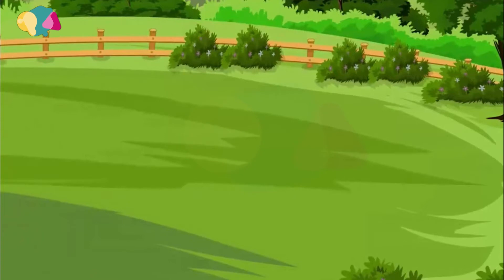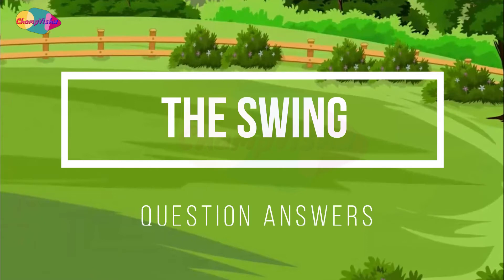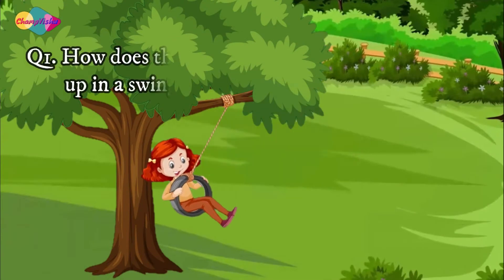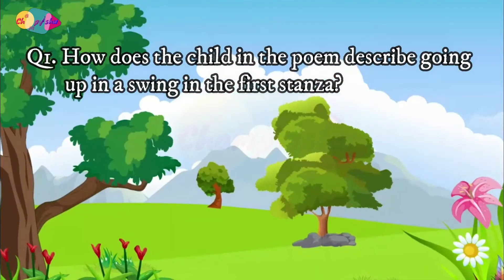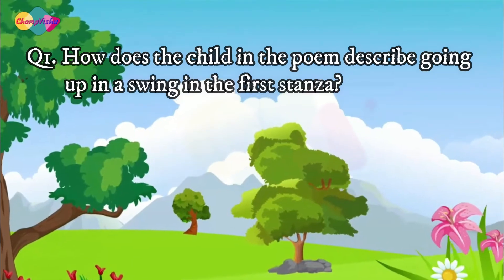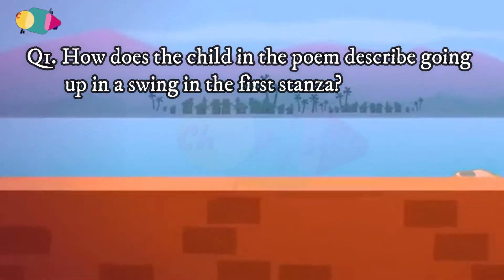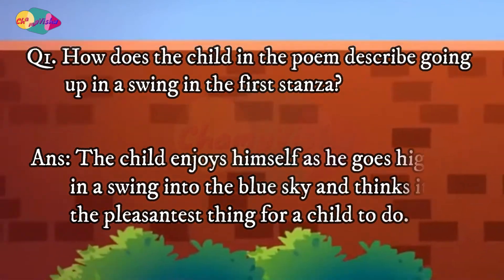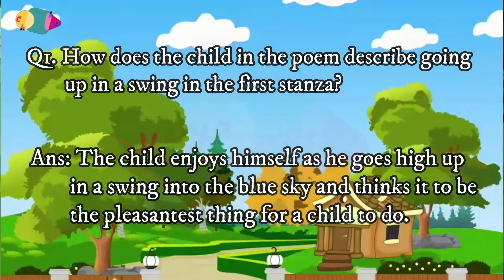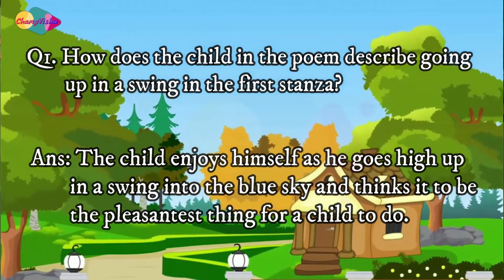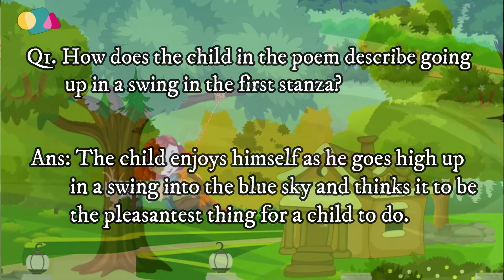Let us read the question answer of the swing. Question 1: How does the child in the poem describe going up in a swing in the first stanza? The answer is, the child enjoys himself as he goes high up in a swing into the blue sky and thinks it to be the pleasantest thing for a child to do.